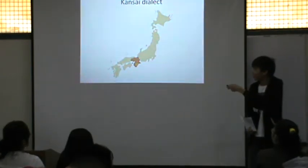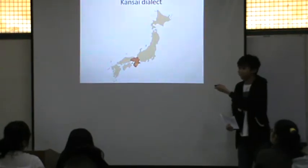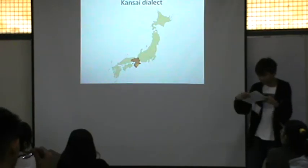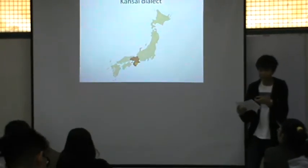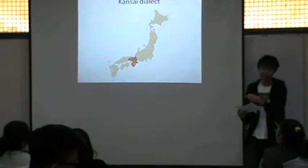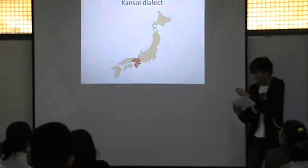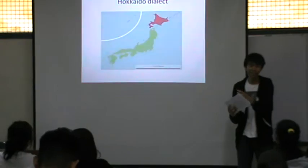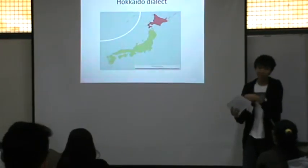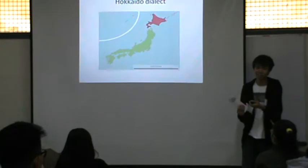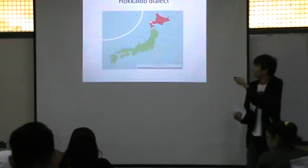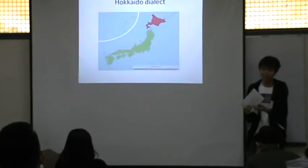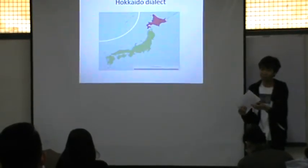The next dialect is the Kansai dialect, usually spoken in major Japanese cities like Kyoto and Osaka. The character of this dialect is being more melodic, and it differs from the Japanese standard language. The next is the Hokkaido dialect. This dialect is usually spoken by people in Hokkaido, and this dialect is mostly associated with the native speakers of that region.